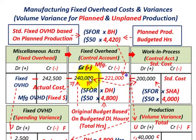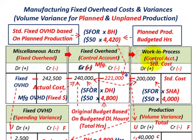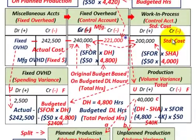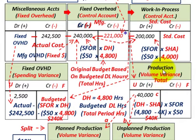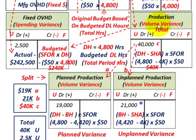We'll take the original budgeted amount based on direct labor dollars for fixed overhead and compare it to standard fixed overhead based on planned production. Then we'll move amounts from the fixed overhead control account into a work-in-process control account based on standard costs. The difference between standard and actual costs is where our variances arise — a fixed overhead spending variance and a production volume variance, further broken down between planned and unplanned production volume variances.